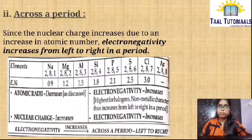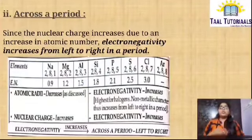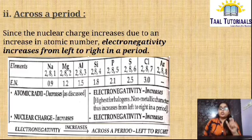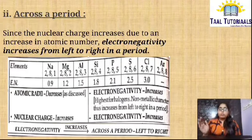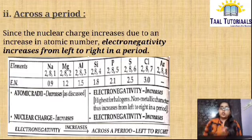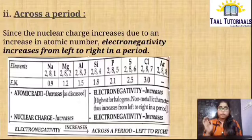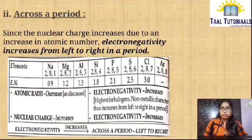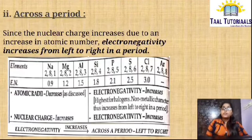Across a period — moving from left to right across the periodic table — there is an increase in electronegativity. Since the nuclear charge is increasing due to an increase in atomic number, and atomic number increases moving left to right, nuclear charge also increases. As nuclear charge increases, electronegativity also increases from left to right. In this picture, atomic radius decreases and electronegativity increases — they are opposite. Nuclear charge increases and electronegativity increases as well. So electronegativity increases across a period from left to right.